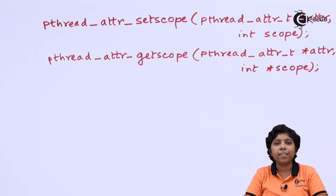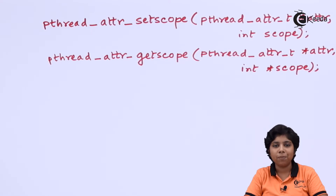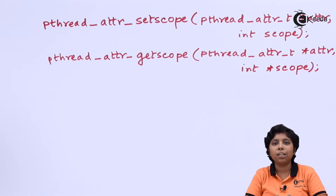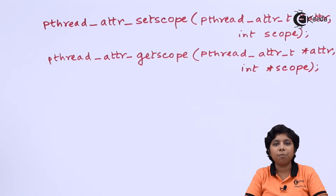If an error occurs in either function, it will return a non-zero value. We will now see an example demonstrating how to get the current scope of a process, set it to PTHREAD_SCOPE_SYSTEM, and then create five threads running concurrently. Note that some systems — such as Windows, Linux, and macOS — only provide PTHREAD_SCOPE_SYSTEM handling.